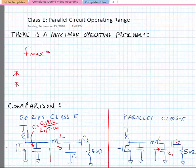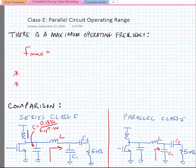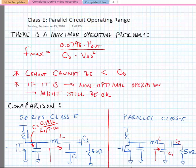As mentioned a moment ago, there is a maximum operating frequency, and the maximum operating frequency was also derived by Gravennikov. It's equal to 0.0798 times the alpha power divided by the drain capacitance times VDD squared. So what this is really telling us is that C-shunt cannot be less than the drain capacitance, and if it is, it will be non-optimal operation.